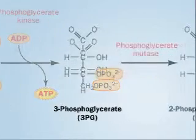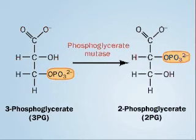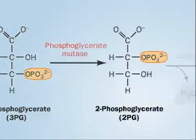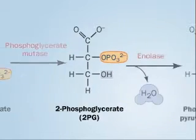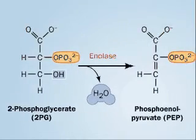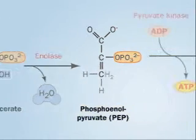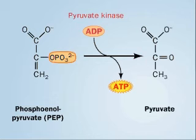Phosphoglycerate mutase transfers 3PG's phosphate from the 3-carbon to the 2-carbon, making its isomer, 2-phosphoglycerate, 2PG. Enolase then removes a water molecule to make phosphoenolpyruvate, PEP. Finally, pyruvate kinase removes the last phosphate to make pyruvate plus ATP.